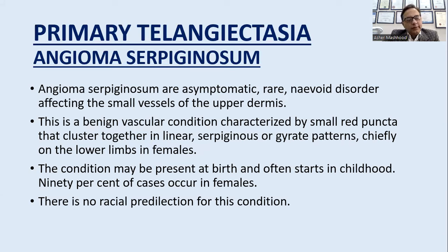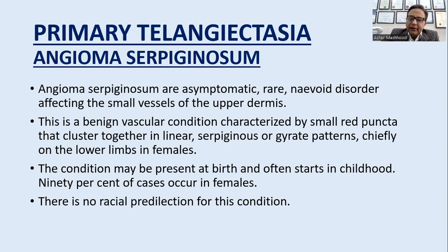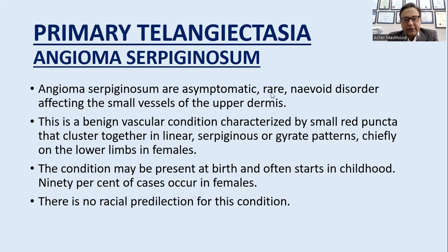Angioma serpigenosum is an asymptomatic, rare nevoid disorder affecting small vessels of the upper dermis. It is a benign vascular condition characterized by small red puncta that cluster together in a linear, serpigenous, or gyrate pattern, chiefly on the lower limb in females. The condition may present at birth, often starting in childhood, and 90% of cases occur in females.